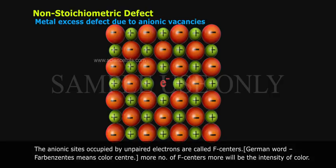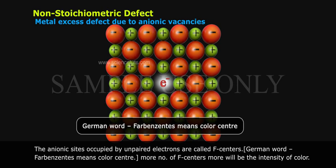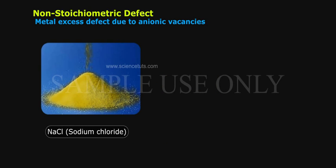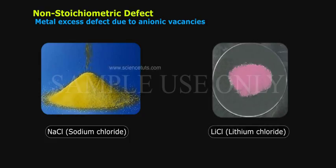The anionic sites occupied by unpaired electrons are called F-centers. F-center is a German word meaning color center. The greater the number of F-centers, the more intense the color. For example, NaCl (sodium chloride) appears yellow, and LiCl (lithium chloride) appears pink.